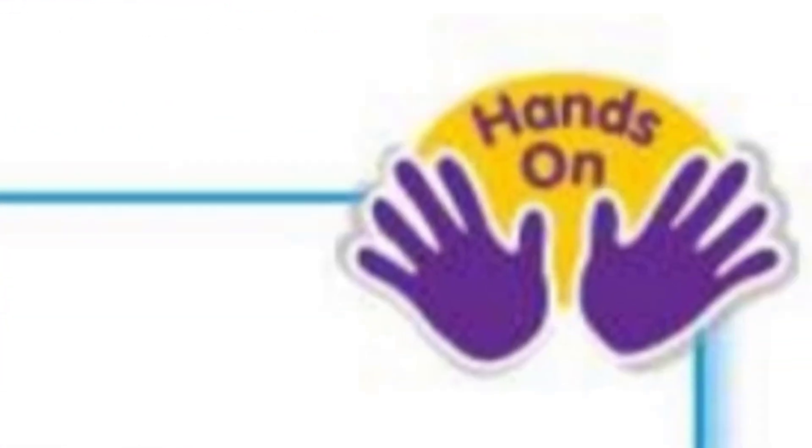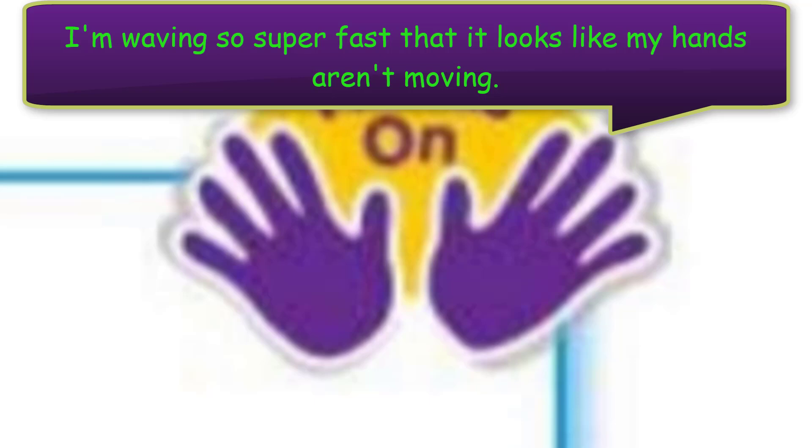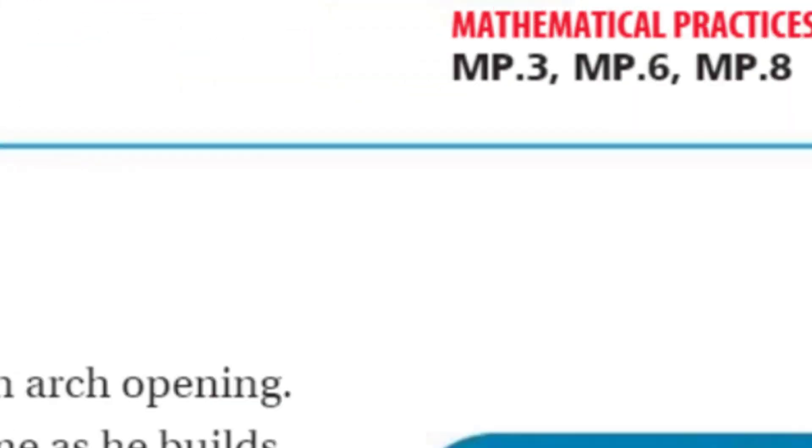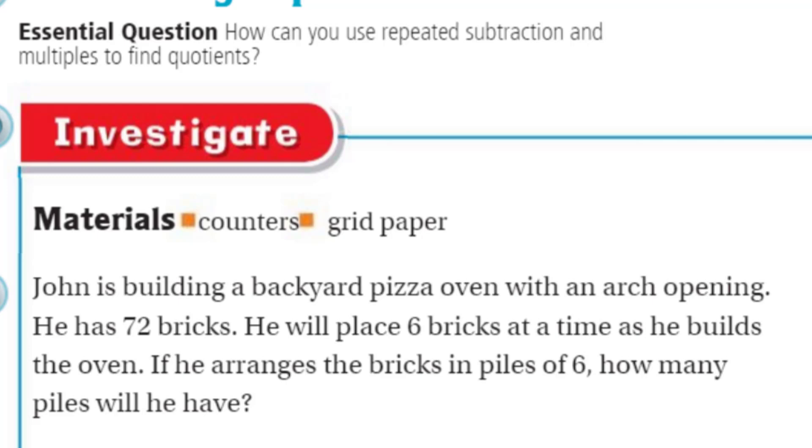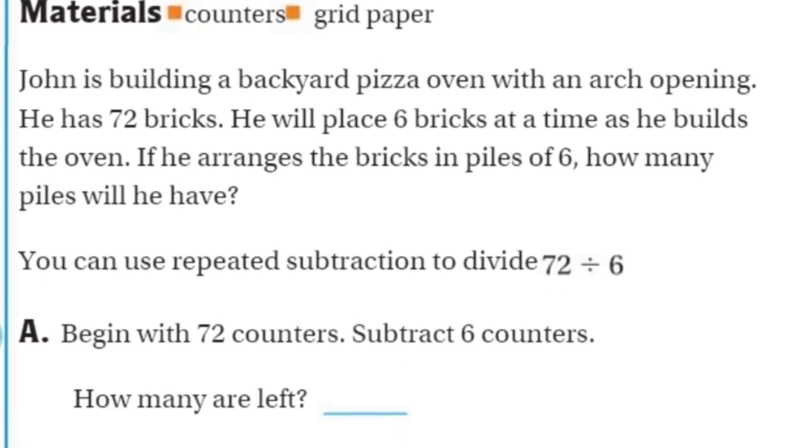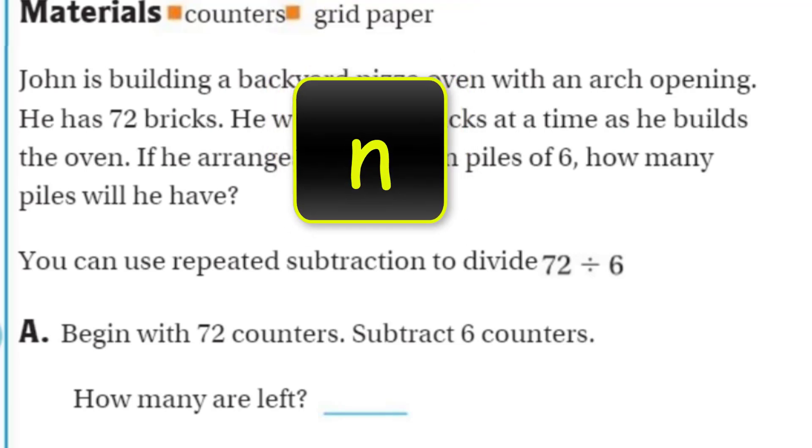We have an investigate. We are going to be doing an investigate, which means we're going to probably be using some materials. You can see the materials listed here are counters and grid paper. My virtual ones, of course. Now, the problem says, John is building a backyard pizza oven with an arch opening. It says he has 72 bricks. He will place six bricks at a time as he builds the oven. If he arranges the bricks in piles of six, how many piles will he have? What a question. Very interesting. It says that you can use repeated subtraction to divide 72 divided by six.